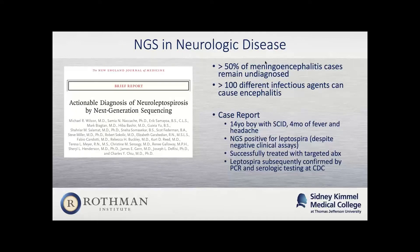This next case is one briefly mentioned earlier — a case report in the New England Journal of Medicine looking at meningoencephalitis, many cases of which go undiagnosed due to the high number of infectious agents that can cause this disease. A 14-year-old boy had fever and headache for four months; multiple workups were negative for identifying any pathogen. NGS identified leptospira, and the patient was successfully treated, later confirmed by the CDC through PCR and serologic testing.